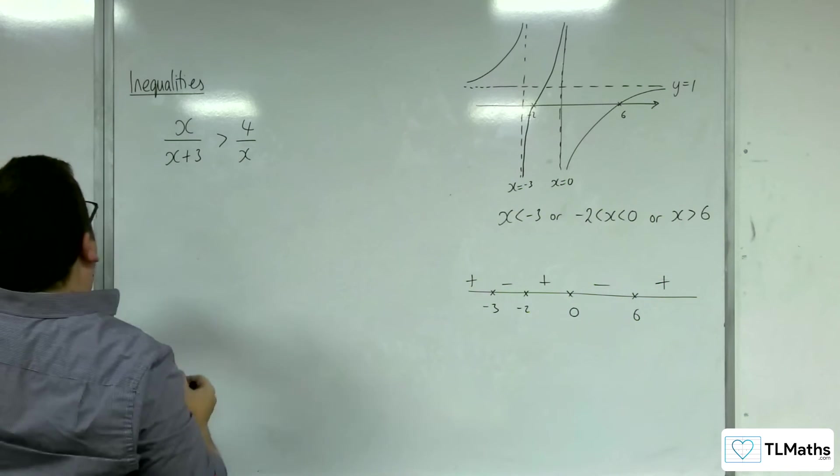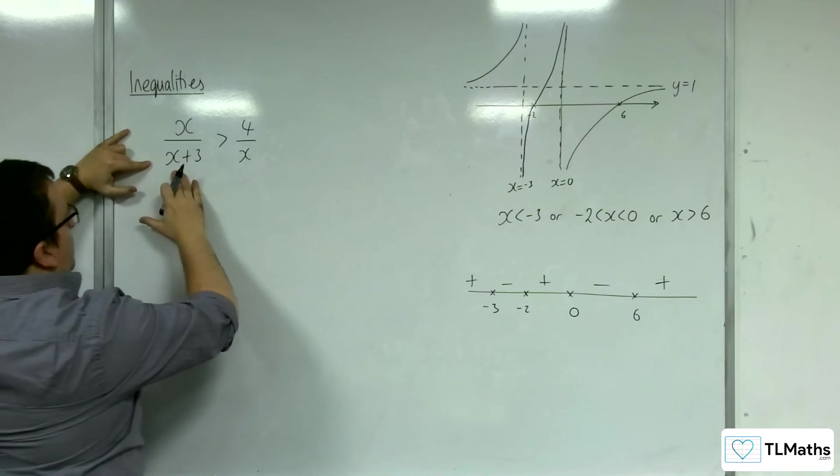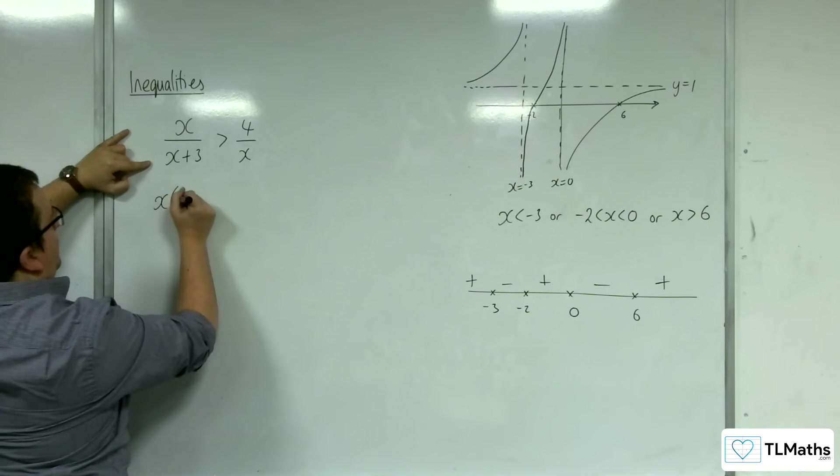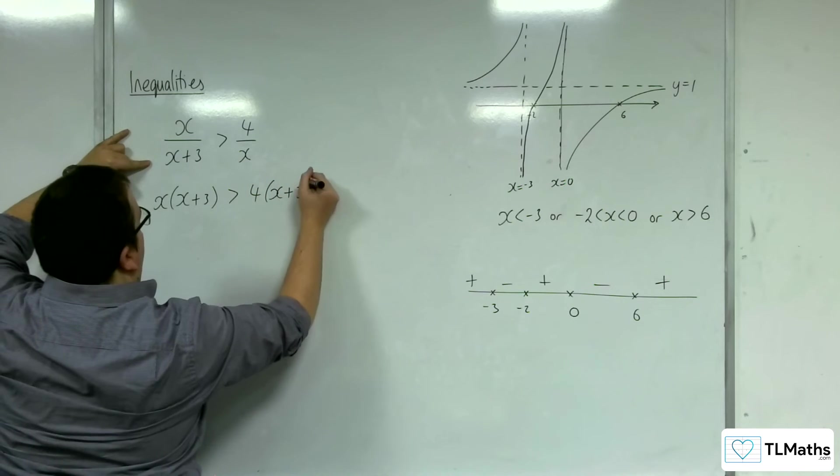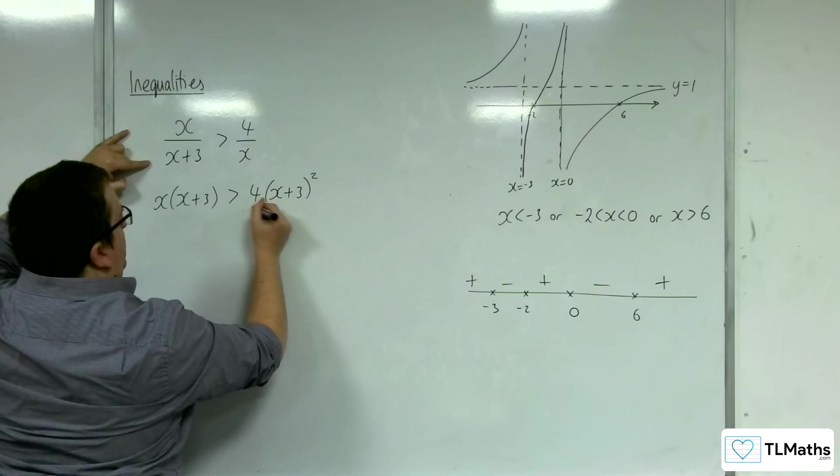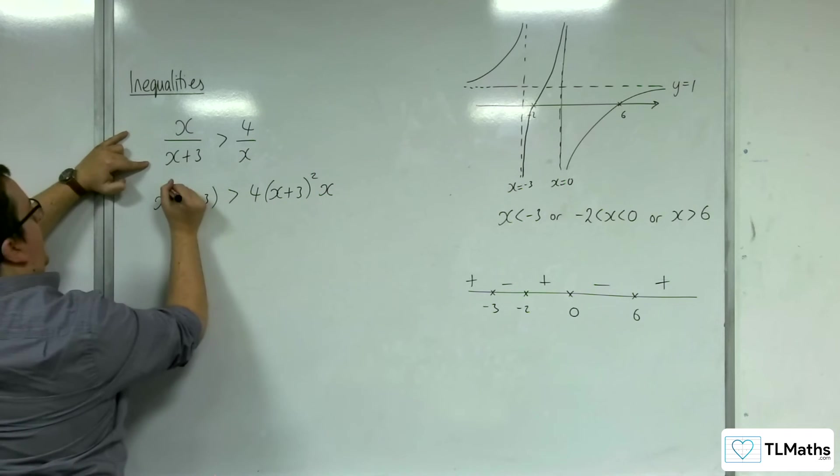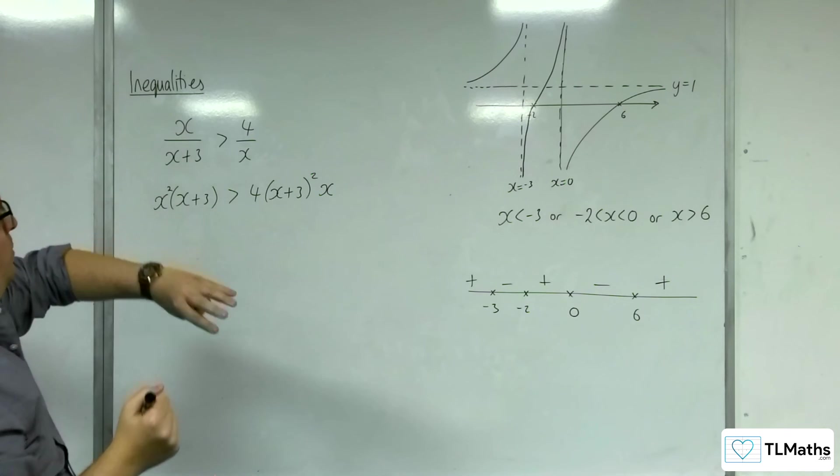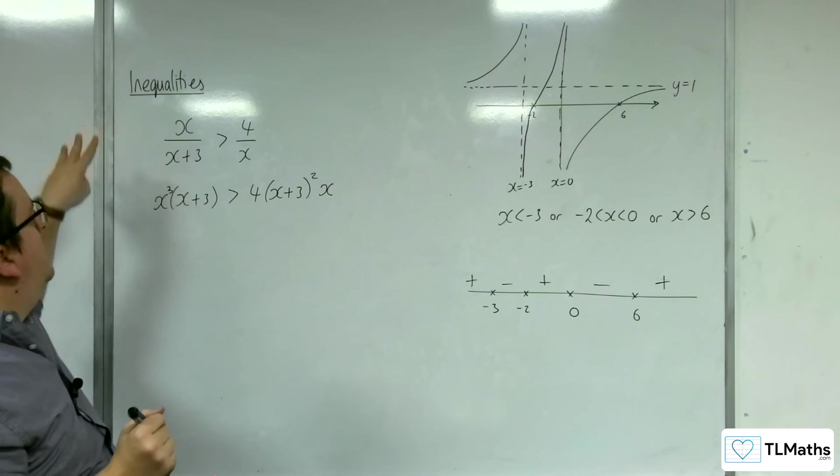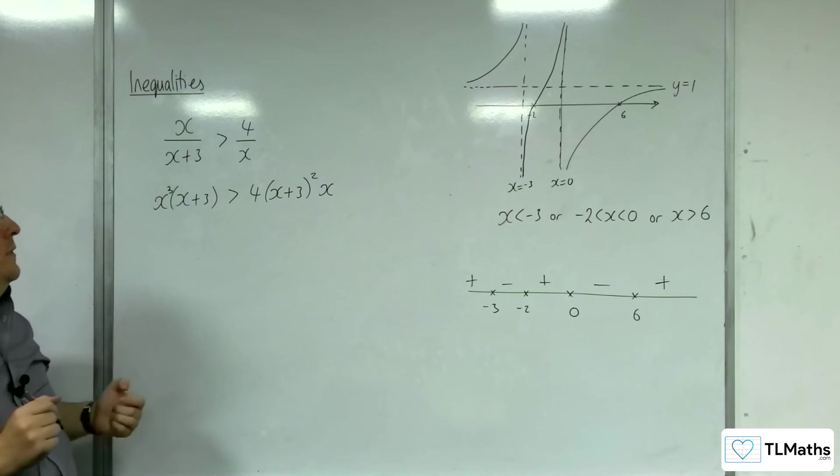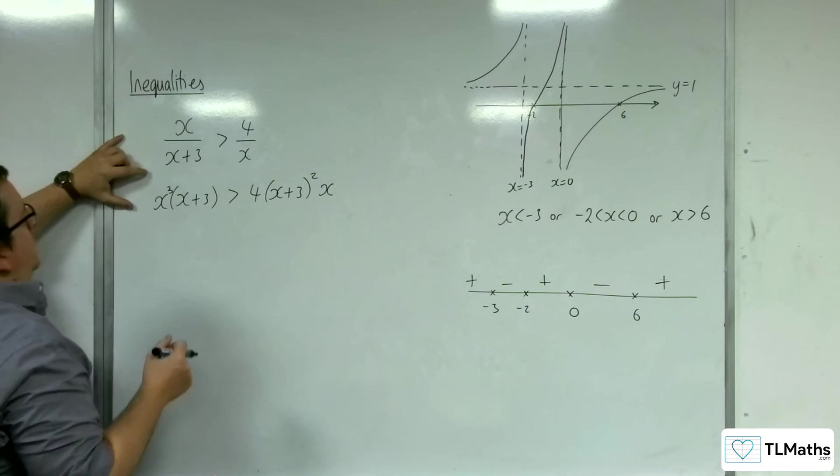So what I'm going to have to do is multiply both sides by x plus 3 squared and x squared. So let's multiply both sides by x plus 3 squared first. I'm going to get x lots of x plus 3 on the left-hand side and 4 lots of x plus 3 squared on the right-hand side over x. But I'm going to multiply both sides by x squared as well. So I'm going to get an extra x and x squared there. So I've multiplied both sides by x cubed, actually. I've multiplied both sides by x squared. I've multiplied both sides by x plus 3 squared. Okay, and so this is what I would end up with.